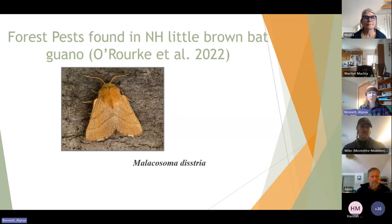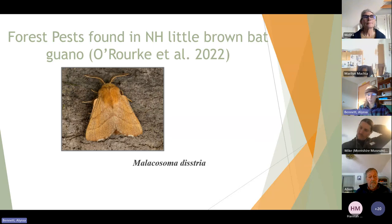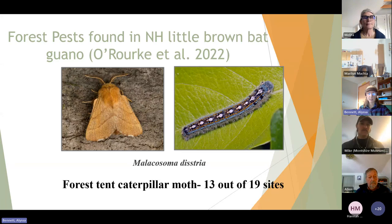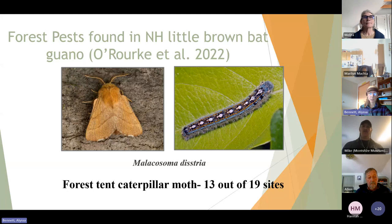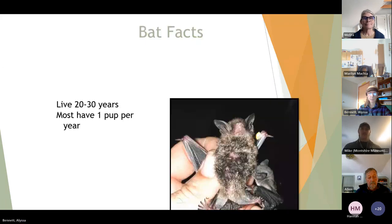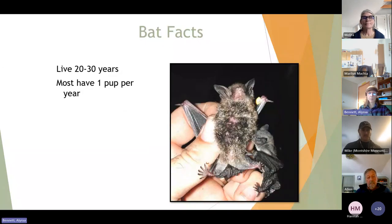Some of those insects are pests to us or our environment. A colleague in New Hampshire studied little brown bat droppings and discovered that bats who eat moths had evidence in their guano — specifically from the forest tent caterpillar moth, found at 13 out of 19 little brown bat colony sites studied in New Hampshire. Bats also live a very long time, which is unusual for small mammals — they can live 20 to 30 years.